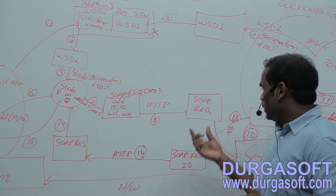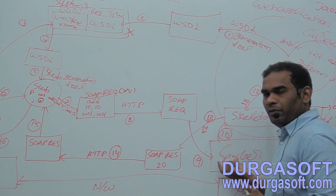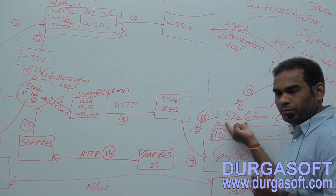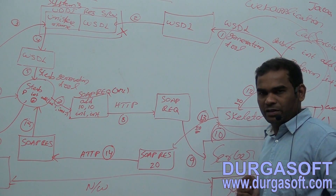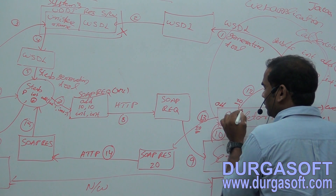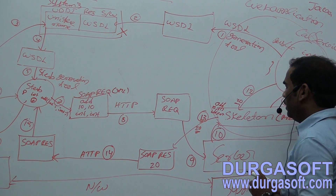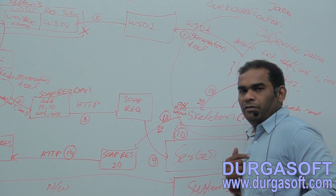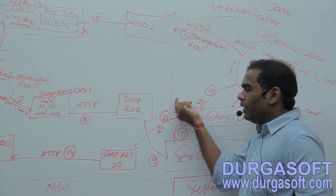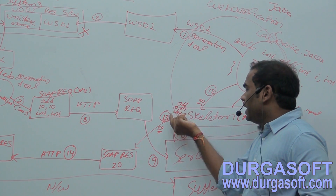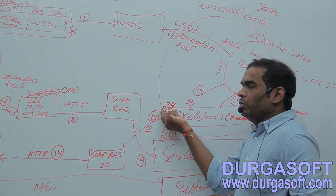The SOAP request is handed over by the server to the skeleton. The skeleton reads the method details — the client-requested method details — from this SOAP request. The skeleton now has the method name 'add', parameter values 10, 10, and parameter types int, int. The skeleton can understand which method to invoke on the service class. Instead of the client directly invoking the method on the service class, the skeleton does that job.